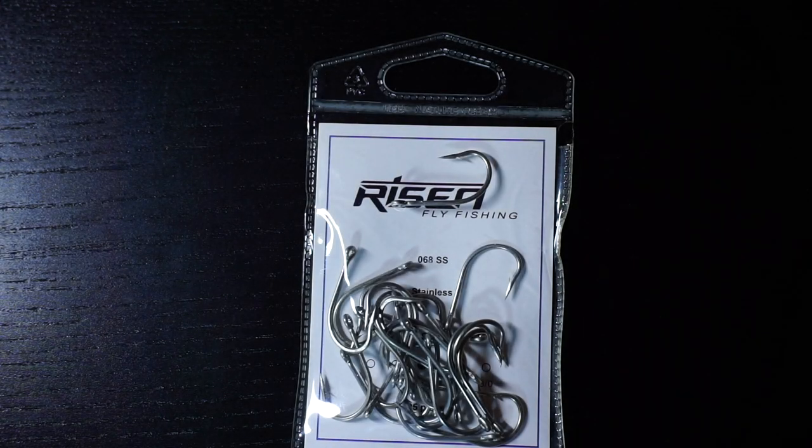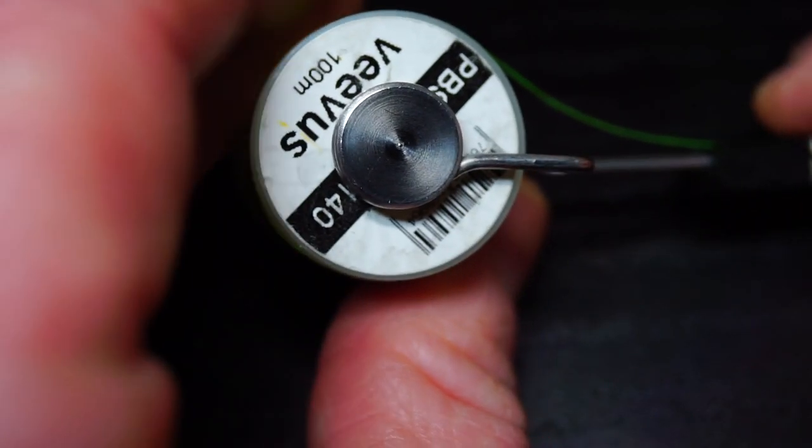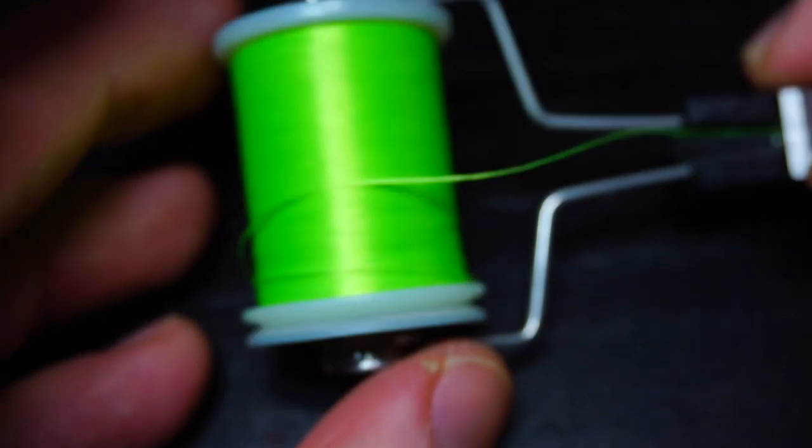For a hook you want a short shank streamer hook like these 068s from Risen, and I'm using a size 1-ought today. For thread you want a strong thread like this Veevus 140 power thread, and I'm using chartreuse.